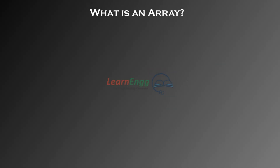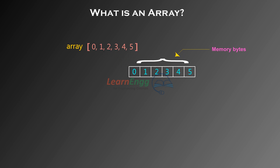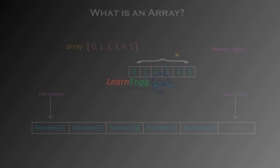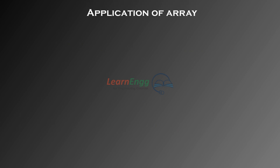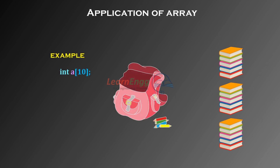What is an array? An array is a collection of same type of elements which are sheltered under a common name. An array can be visualized as a row in a table, where each successive block can be thought of as memory bytes containing one element.